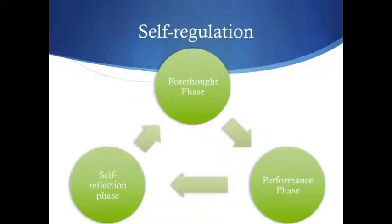Another idea from social cognitive theory is self-regulation — that we want individuals to be able to regulate their own behaviors and their own goals eventually. If we're working with five- and six-year-olds, this may not be where they are now, but it's something you can work towards. Self-regulation includes three phases. First, you have the forethought phase, which happens before an action.